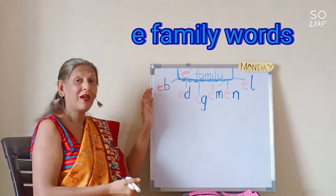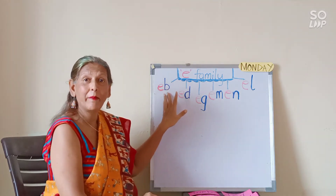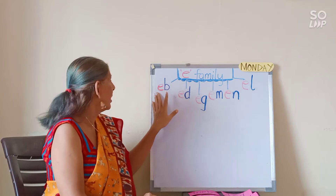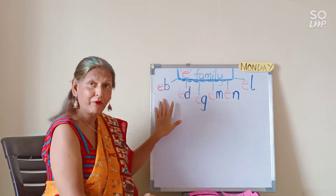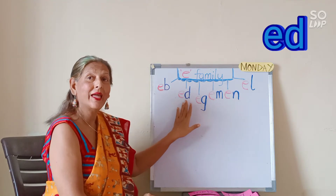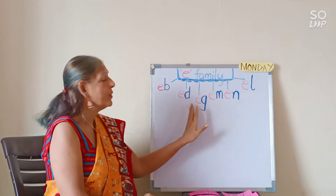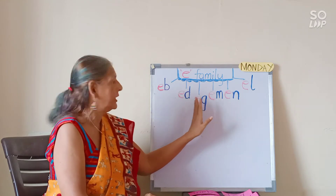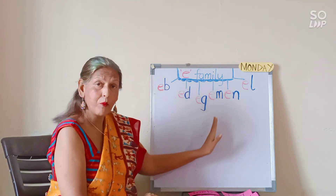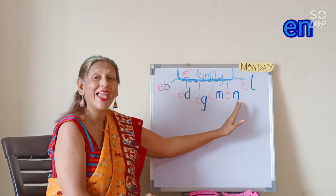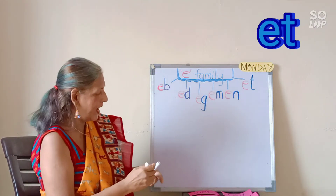So here we have the E families. All the words which end with EB are the E family. All the words which end with ED are the E family. Words ending with EG are the E family. EM, EN, and ET words are also the E family. So these, my dear children, are the E families.